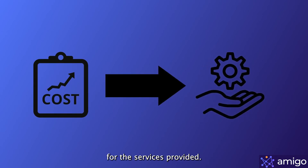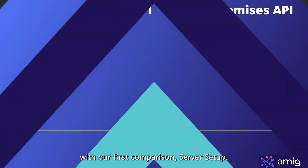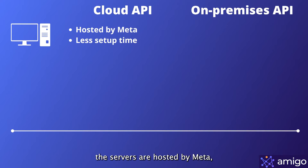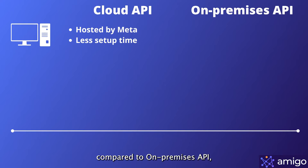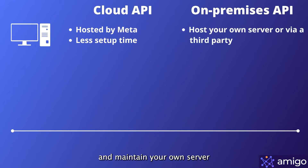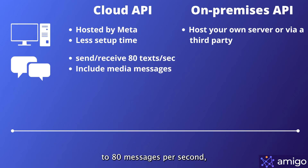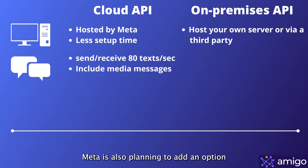They cost a significant amount of extra money for the services provided. Starting with our first comparison — server setup — in Cloud API, the servers are hosted by Meta, which requires significantly less setup time compared to On-Premises API, which required you to set up and maintain your own server or get help from a third party. For our second comparison, messaging limit: using Cloud API, you can send and receive up to 80 messages per second, including media messages, without a separate media API. Meta is also planning to add an option to upgrade to 250 messages per second by the end of July.